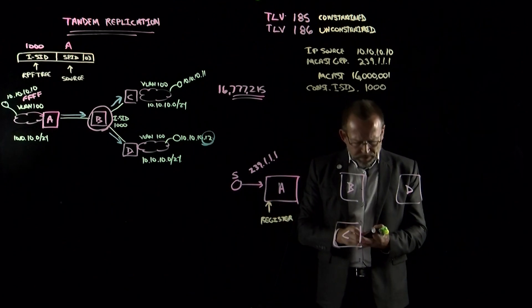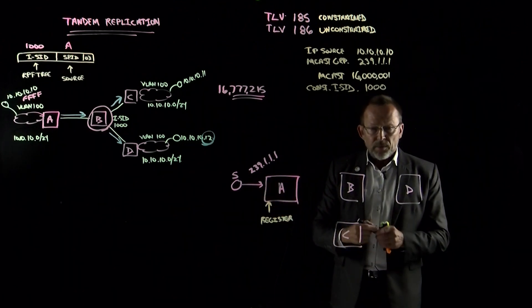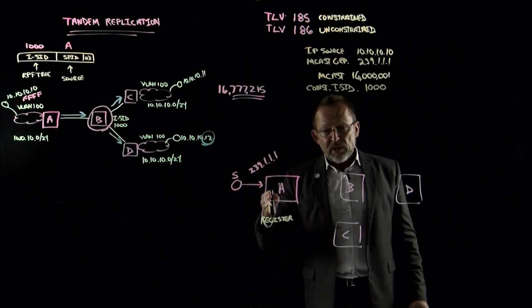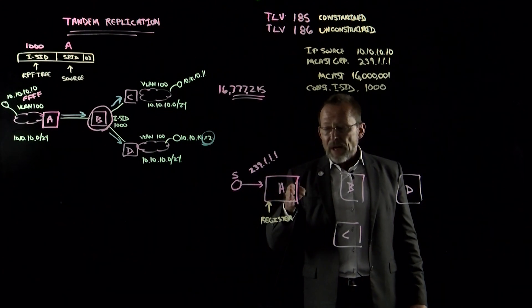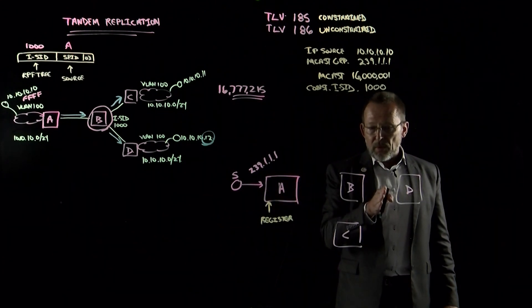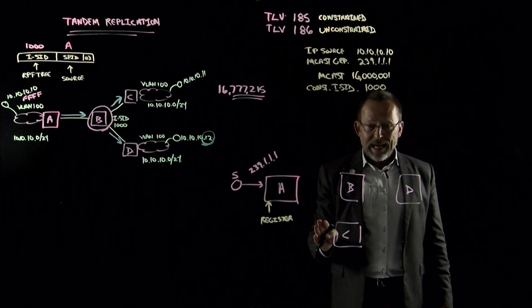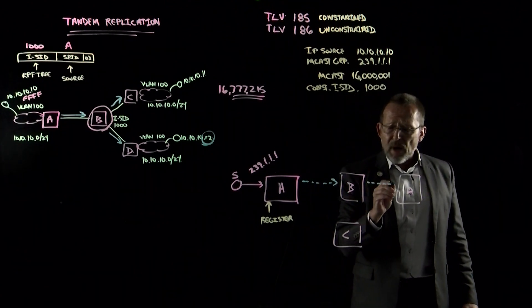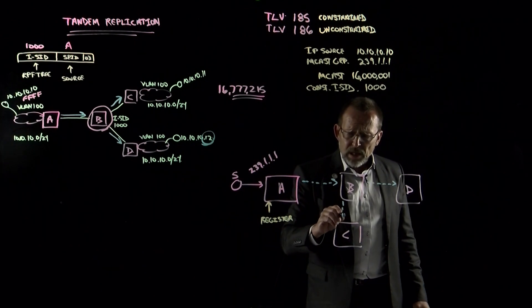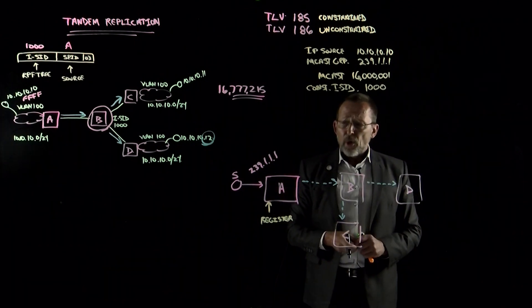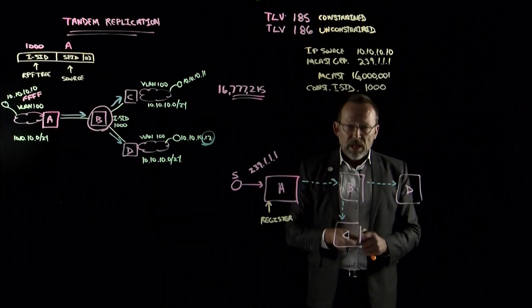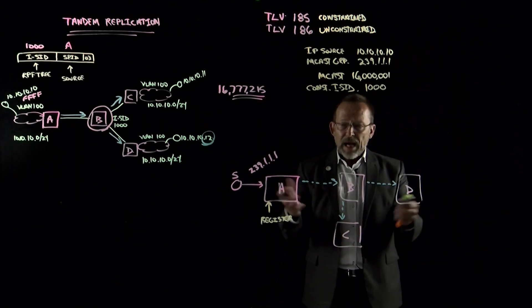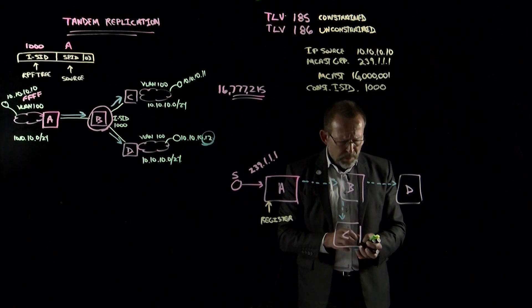So now at this point in time, there is an advertisement of type length value, what's known technically as a triggered update. So a triggered update works on the principle that as soon as the source is seen, A registers it and then sends the triggered update through ISIS using type value 185. And at that point, the ISIS update propagates to B, B propagates it out to D, and over to C as well. Now the environment is locked and loaded. If anyone wanted to join 239.1.1.1 and they were part of the community of ISID 1000, they would be allowed to join the service.